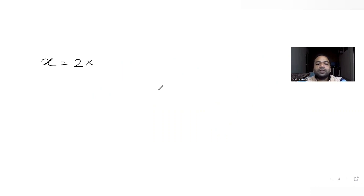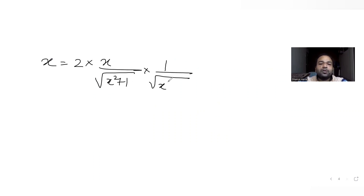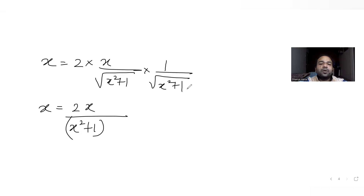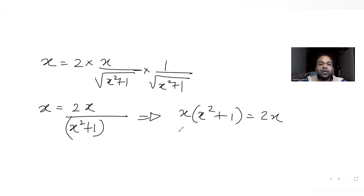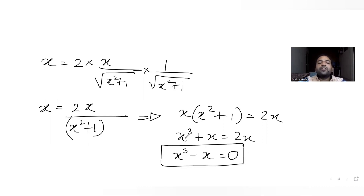Simplifying: x = 2x / (x²+1), since √(x²+1) · √(x²+1) = x²+1. This gives x(x²+1) = 2x, and rearranging: x(x²+1) - 2x = 0, so x(x²+1-2) = 0, which simplifies to x(x²-1) = 0.